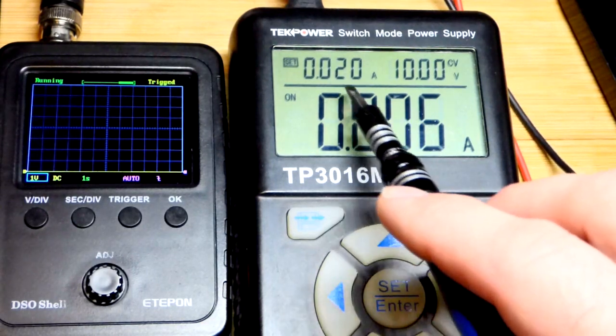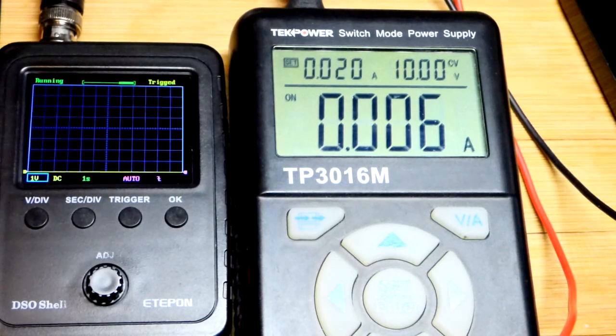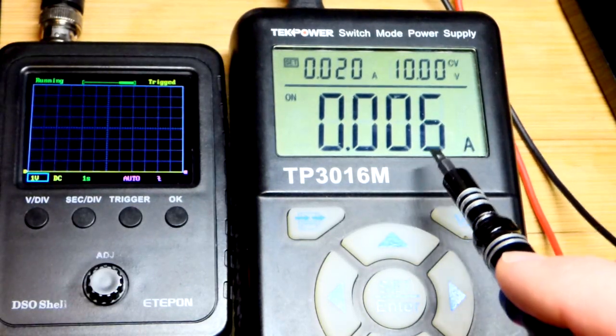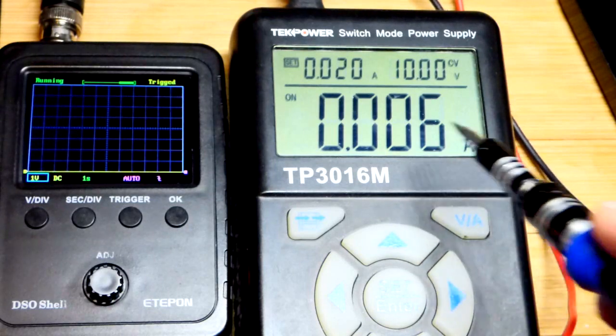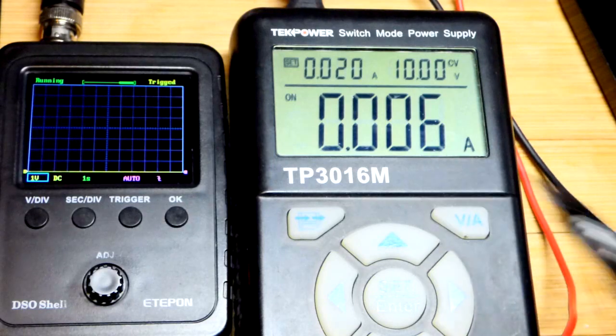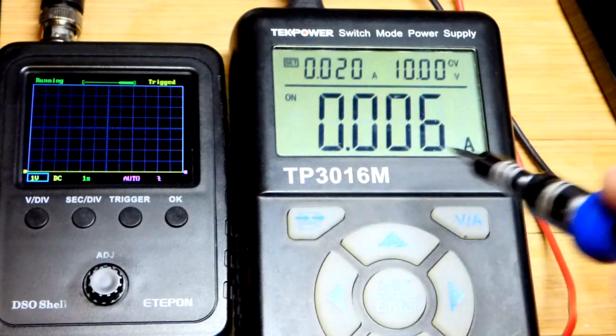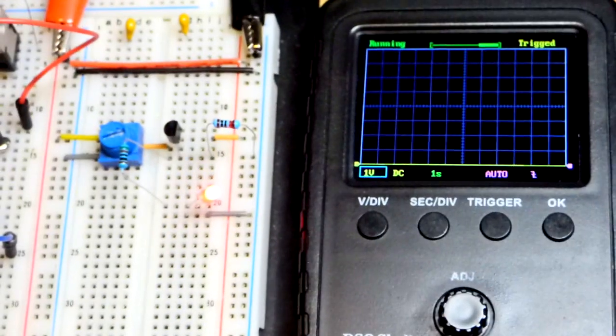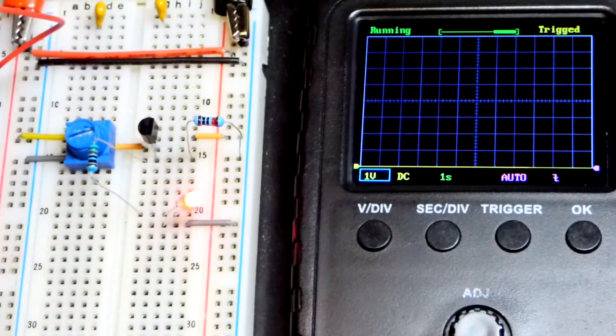And we have about 6 milliamps of current flowing through this circuit. And I limited the current of the power supply to 20 milliamps of current. So that tells me we're going to have somewhere around 3 volts across that resistor.